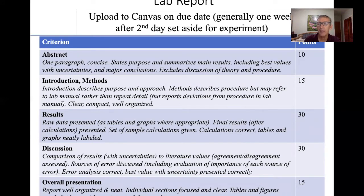In the rubric, there should be an abstract. It should be concise, never more than one paragraph. This is simply professionalism we're teaching you. It states the purpose and summarizes the main results, including your best values with uncertainties, and also lists your major conclusions. This is not a place to discuss your theory, not a place to discuss the procedure.